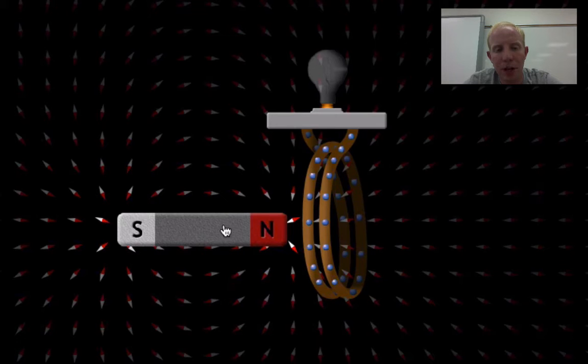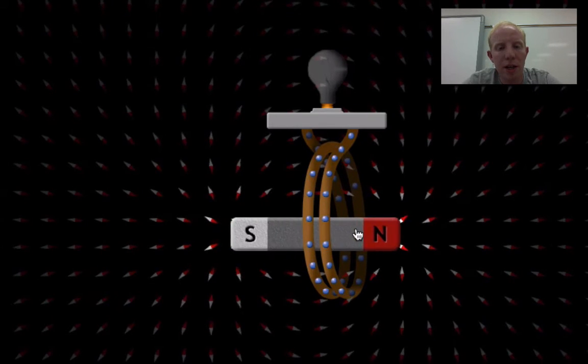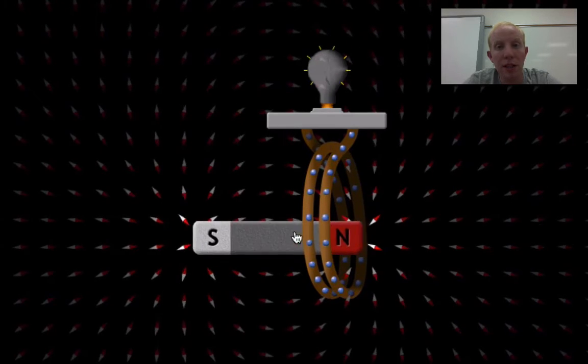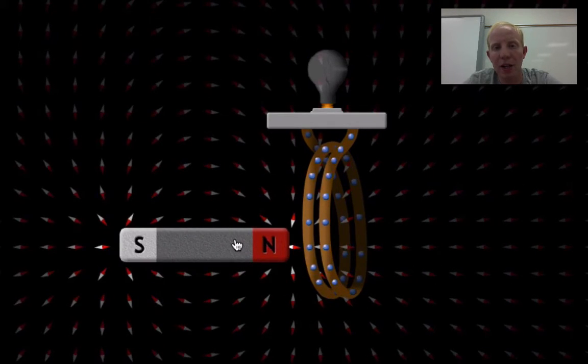If I just let the magnet sit here, it's not going to do anything. If I let it sit here, it's not going to do anything. It's that motion that causes the light bulb to turn on and off. That's electromagnetic induction.